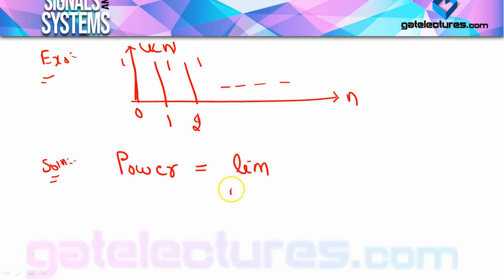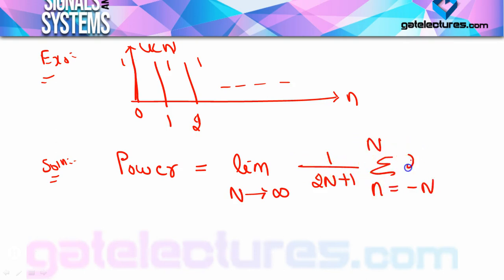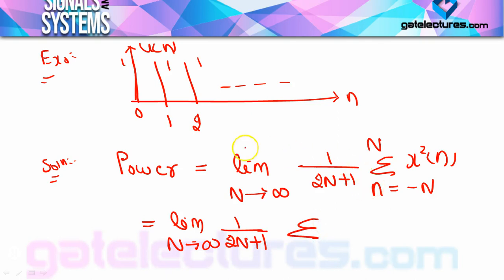Power formula for discrete: P = lim(N→∞) [1/(2N+1)] · Σ(n = -N to N) |x[n]|². Since u[n] = 0 for n < 0, the effective summation is from n = 0 to N. In that range, u[n] = 1, so u²[n] = 1. The sum equals (N+1) ones added, giving (N+1).